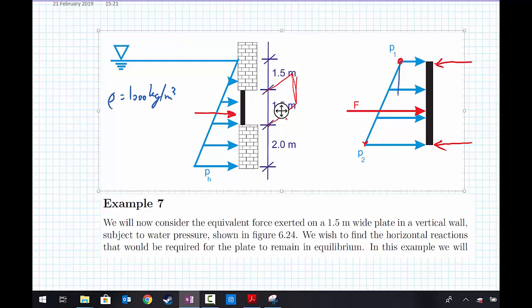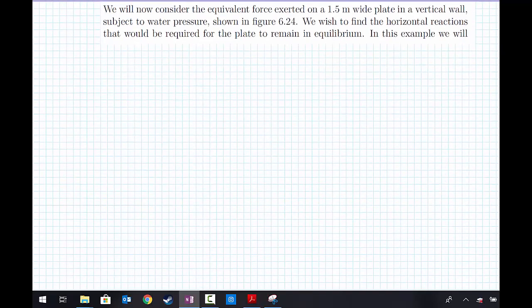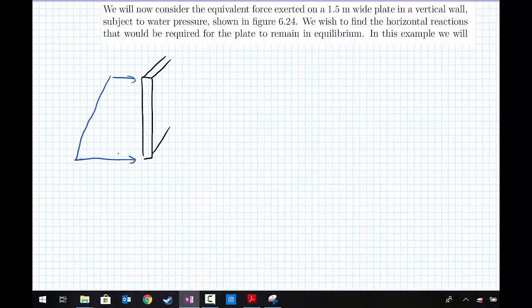This is how we're going to treat it in this problem: get this pressure block and split it into a triangular section and a rectangular section. Let's zoom in and redraw what we're talking about. We have our gate going out of plane 1.5 meters with this trapezoidal loading upon it, and we're going to reduce this trapezoidal loading into two parts.